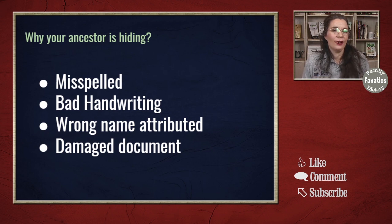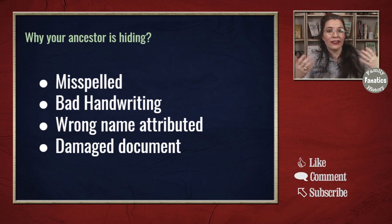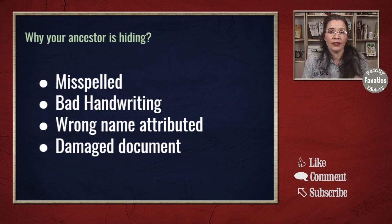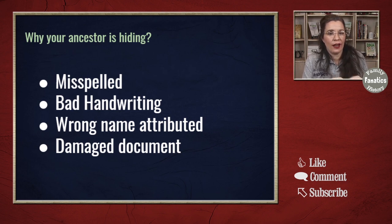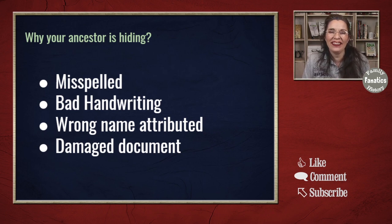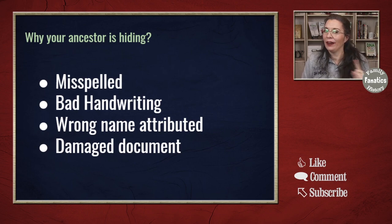The other problem is that records are damaged from water, fire, flood, or ink blots. Sometimes that damage will corrupt the ability to see your ancestor's name — the rest of the details are there, but you can't read their name. So there are some strategies to try to find out where they're hiding.